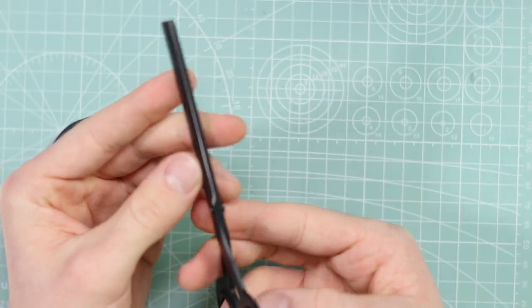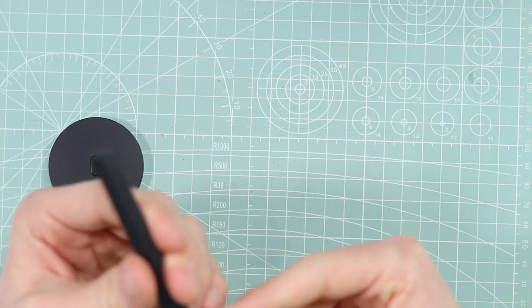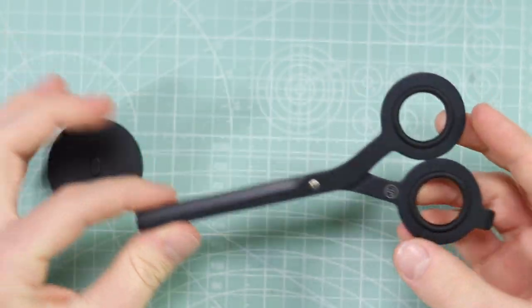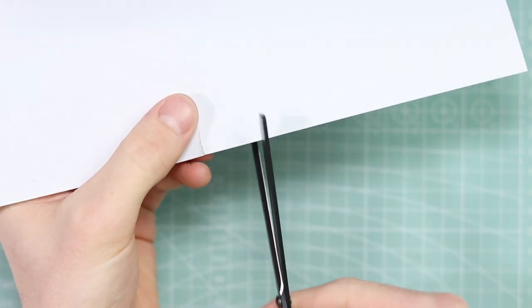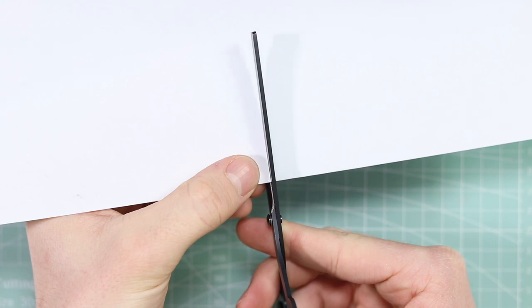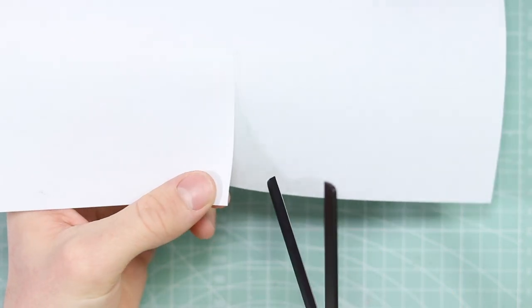Let's do some cutting, because I suppose that's quite an important thing to do in a review of a pair of scissors. So here is a piece of paper, the finest of papers. That is a lie, it's just whatever I had in my drawer. Yeah, cuts perfectly.